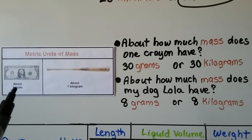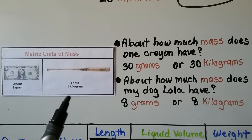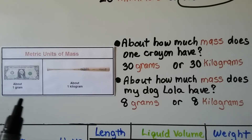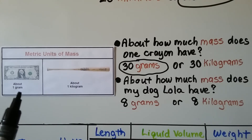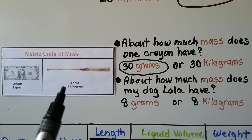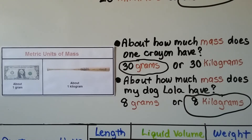We have metric units of mass. A gram is about the weight of a dollar bill, and a kilogram is about the weight of a baseball bat. About how much mass does one crayon have — 30 grams or 30 kilograms? If you said 30 grams, you're right — we're just talking about one little crayon. About how much mass does my dog Lola have — about eight grams, or about eight kilograms? If you said eight kilograms, you're right. She actually weighs about 18 pounds in U.S. customary measure, which is about eight kilograms.